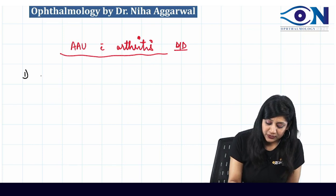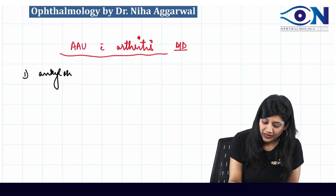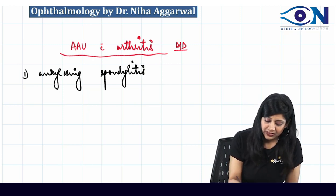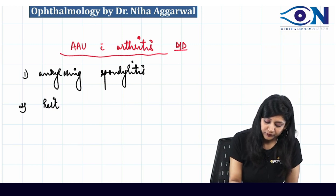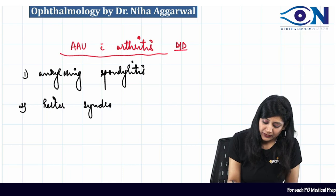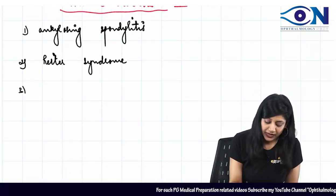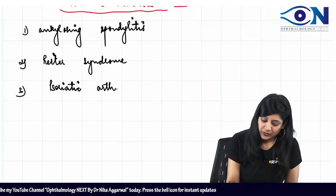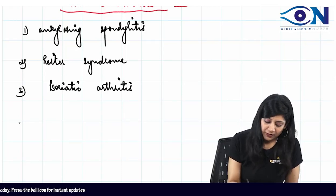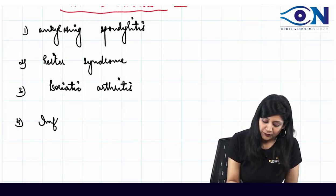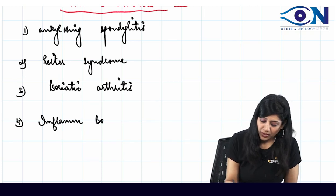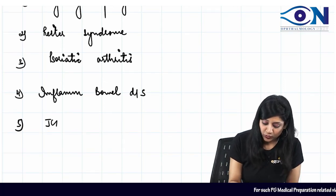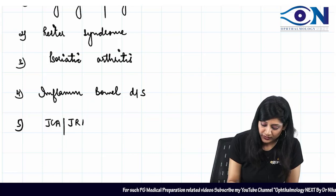Number 1, it can be ankylosing spondylitis. Number 2, it can be Reiter syndrome. Number 3, it can be psoriatic arthritis. Number 4, it can be inflammatory bowel disease. And number 5, it can be juvenile chronic arthritis or juvenile rheumatoid arthritis.